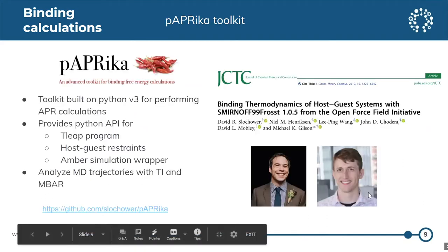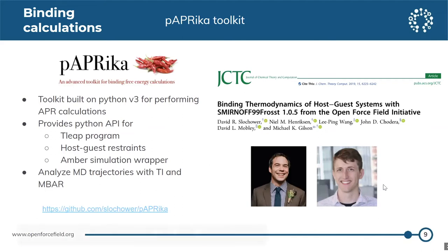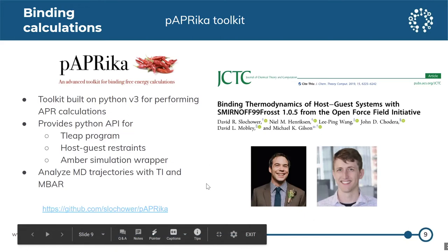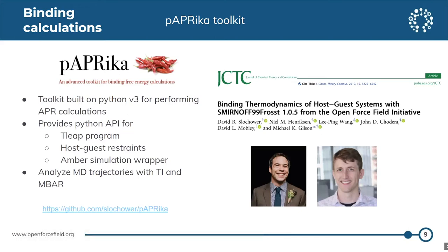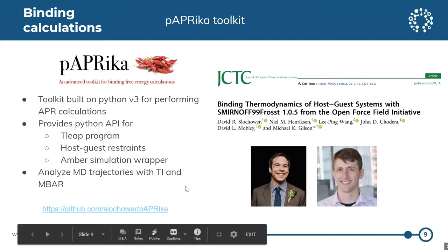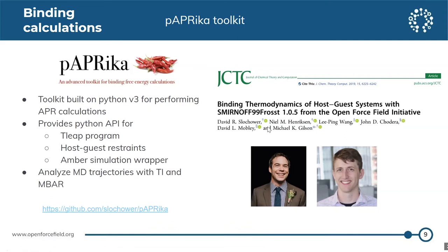Thankfully, we have the Paprika toolkit, which was developed by Dave Slockauer and Neil Hendrickson from the Gilson lab. The Paprika toolkit was built on Python 3 and automates a lot of the process. Right now it interfaces with the Amber simulation program. We can create the topology and structures from a Python API with the tleap program. Host-guest restraints can be set up automatically, and the analysis of the MD trajectories can be done with either TI or MBAR. This toolkit was recently used to benchmark 43 host-guest systems with the GAFF 99 force field.